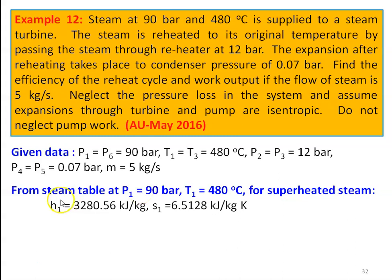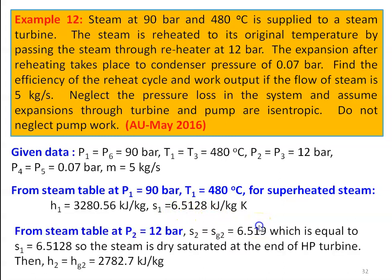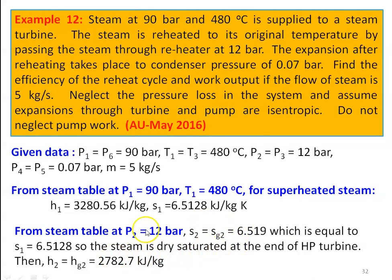From steam table at P1 = 90 bar and T1 = 480°C for superheated steam: H1 = 3280.56 kJ/kg, S1 = 6.5128 kJ/kg·K. From steam table at reheat pressure P2 = 12 bar: Sg2 = 6.519 ≈ 6.5128, confirming steam is dry saturated at end of HP turbine. So H2 = Hg2 = 2782.7 kJ/kg. From steam table at P3 = 12 bar and T3 = 480°C for superheated steam: H3 = 3390.18 kJ/kg, S3 = 7.5578 kJ/kg·K.